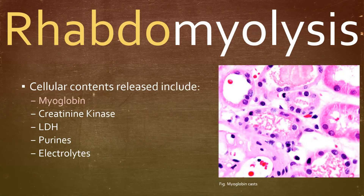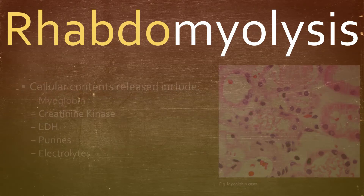The cellular contents involved include myoglobin, which is the most concerning, creatinine, LDH, purines, and electrolytes.